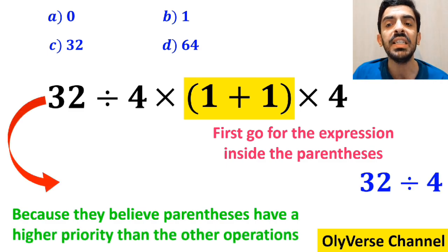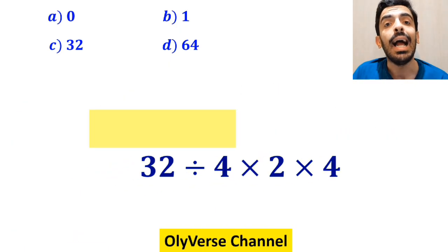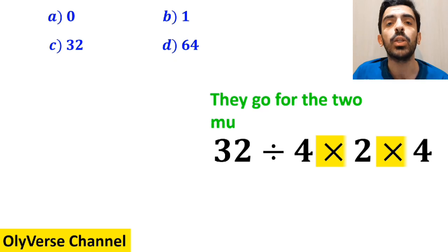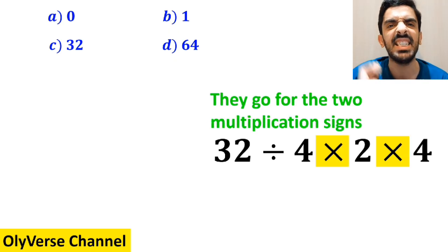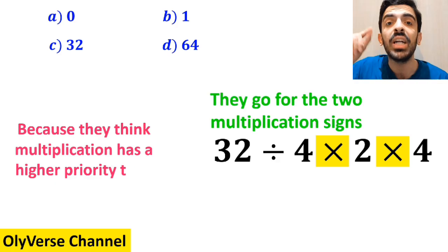So they simplify this expression to 32 divided by 4 times 2 multiplied by 4. And the next step, they go for the two multiplication signs that I've highlighted in yellow because they think multiplication has a higher priority than division.